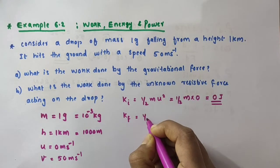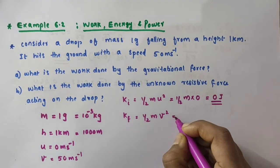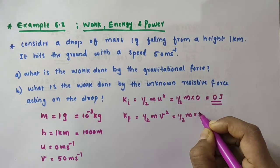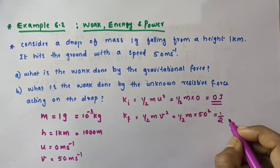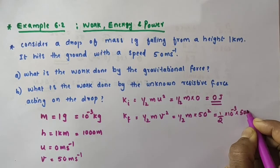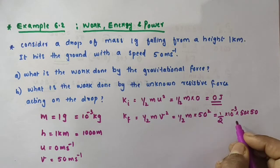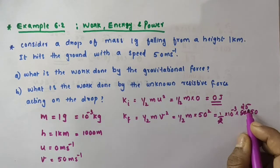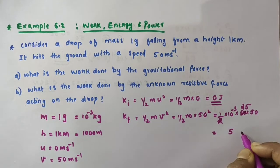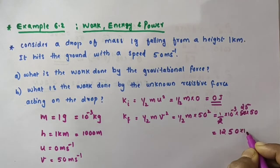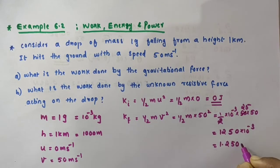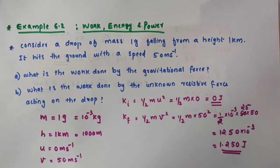The final kinetic energy Kf equals half m times V squared. V is 50 meters per second, so V squared is 2500. That gives us half times 10 raise to minus 3 times 2500. Calculating: half times 2500 gives 1250, and multiplying by 10 raise to minus 3 gives 1.25 Joules. So the initial kinetic energy is 0 Joules and the final kinetic energy is 1.25 Joules.